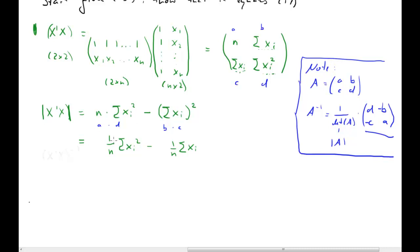Next we compute X'y. X' has rows [1,1,...,1] and [x1, x2,..., xn], and y = [y1,...,yn]. This gives a 2×1 vector: the first element is the sum of y_i, and the second element is the sum of x_i * y_i.